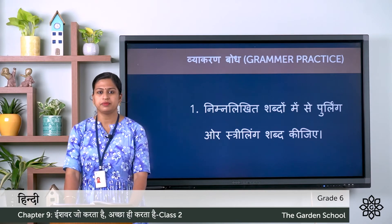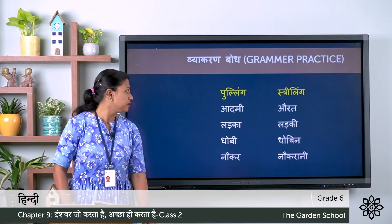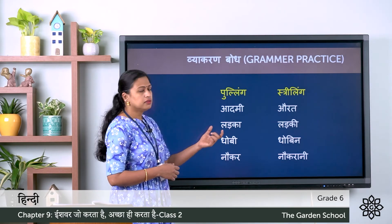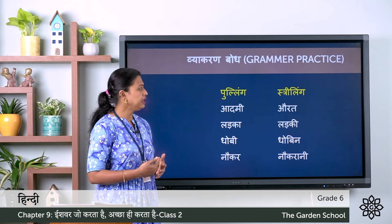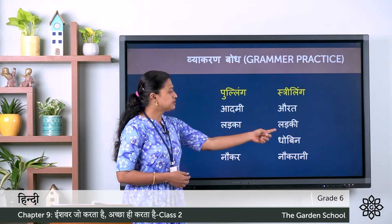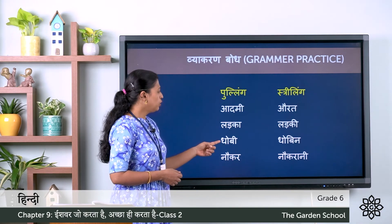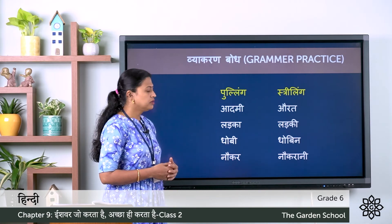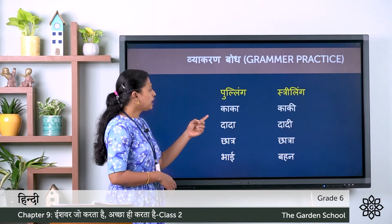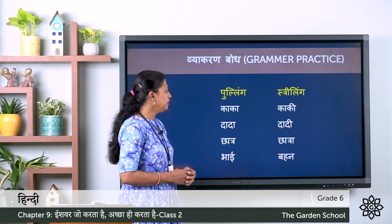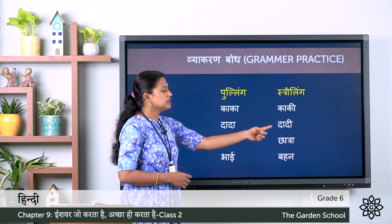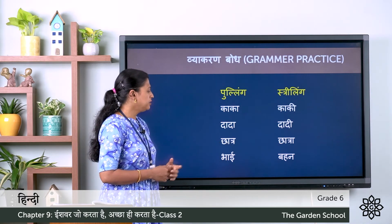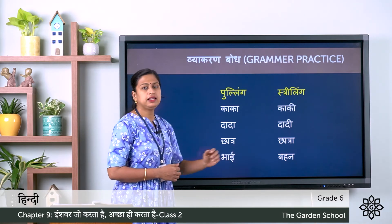Let's check the answers — purling and streling pairs. Aadmi is purling, aurat is streling. Ladka — streling is ladki. Dhobi — streling is dhobin. Naukar — streling is naukrani. Kaka — streling is kaki. Dada — streling is dadi. Chhatra — streling is chhatra. Bhai — streling is bahen.